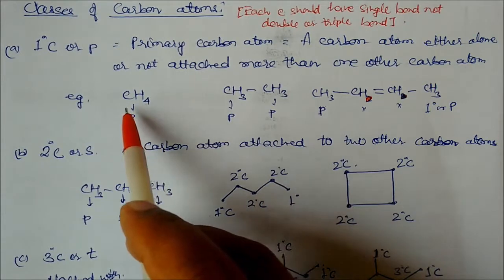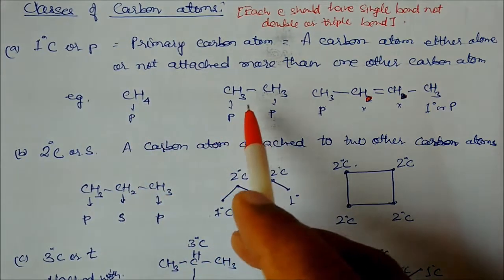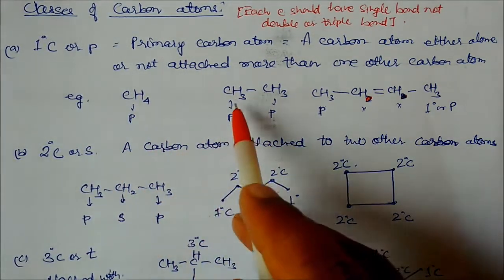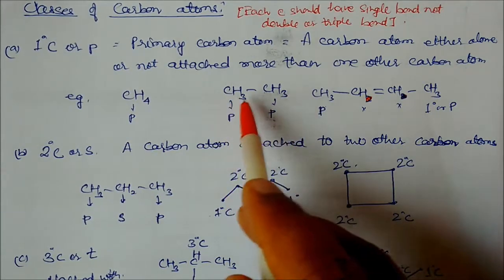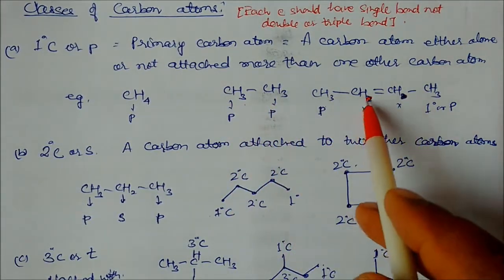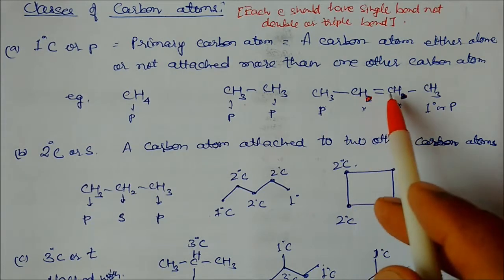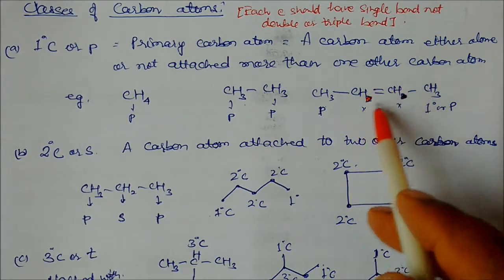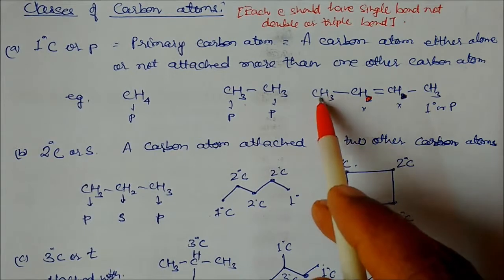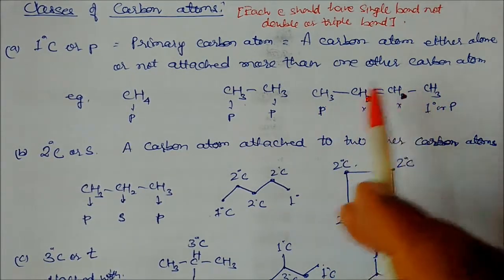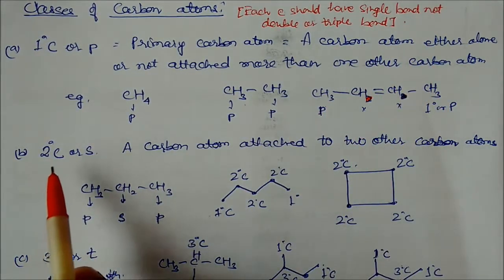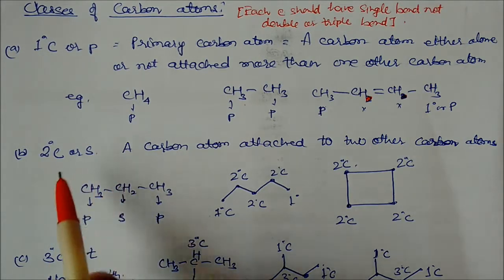A primary carbon has four hydrogens if it is alone, or three hydrogens if it is attached to one other carbon. You can see here molecules with three hydrogens — those are primary carbons. However, a carbon attached by two double bonds cannot be called a primary carbon. Keep this in mind as questions can be asked from here.